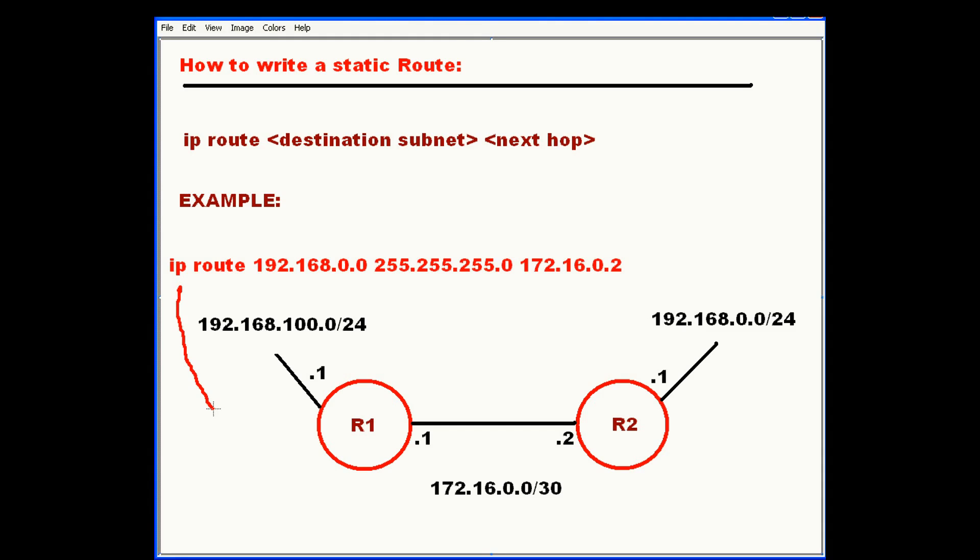So this command will be added to router 1. In order for it to add a static routing entry for traffic destined for the 192.168.0.0/24 subnet, which is over here, it is not directly connected so we needed to add that static route. It's going to forward that traffic to 172.16.0.2, which is this guy right here.